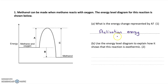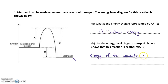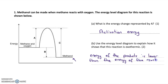Part B is asking you to use the energy level diagram to explain how it shows that this reaction is exothermic. It's exothermic because methanol, the product, has less energy than methane and oxygen, the reactants. So if you wrote down that the energy of the products is lower than the energy of the reactants, you get one mark. The reason for this is that heat energy has been lost to the surroundings — that gets you a second mark. So there are two marks: one for the energy of products being lower than reactants, and one for heat energy being lost.